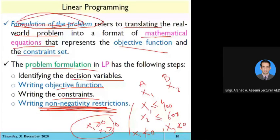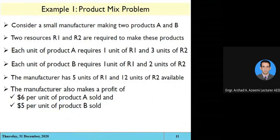The main thing in linear programming is first the formulation — getting to know about the variables and resources, then the conversion of the real system into mathematical equations. Once you have the equations, the solution is easy — that is just mathematical steps. The important thing is formulation: converting the physical system or real-world problem into mathematical equations.